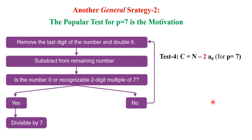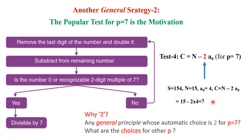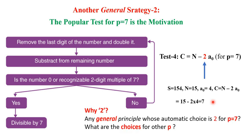But the question is, why N minus 2a₀? Is there any general principle whose automatic choice is 2 for p equal to 7 or what are the other choices for other p values? That is the question. So let us go for strategy 2.